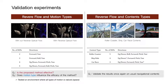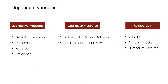We ran a validation experiment to see if the proposed method is effective, which was the most important question in this work. We also varied the factor of motion type to see its relationship to the effect of the method. We also tried to reaffirm our results for real navigation content, conducting a similar experiment with a roller coaster, a shipwreck, and a car race scenario. Dependent variables were sickness level, user experience including presence and immersion. We also collected self-reported sickness levels and motion profile data.